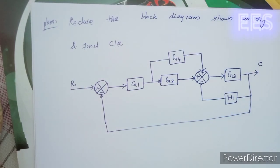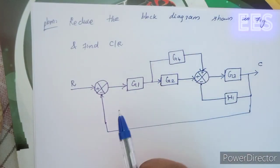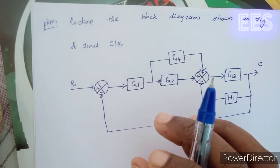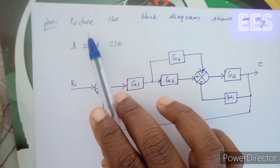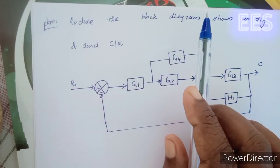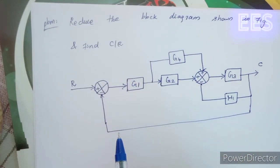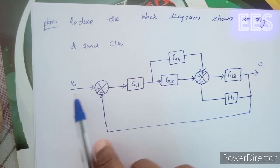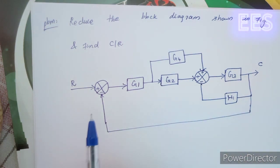Hi students! We will see how to reduce the block diagram transfer function. Reduce the block diagram shown in the figure — find C by R, that is output by input. Input is R and output is C, so we need to find C by R. We will look at the block diagram.